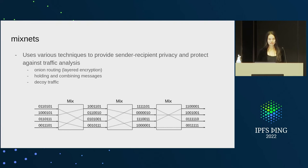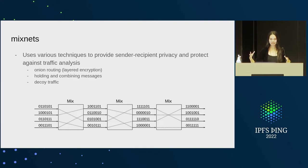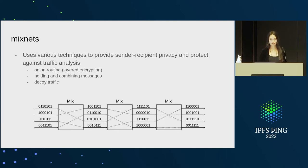Mix nets build on top of onion routing and add other techniques for stronger privacy. With onion routing, you're still vulnerable to timing analysis and traffic analysis. A mix net adds techniques to prevent against that. It uses onion routing but also combines messages into fixed-size bundles, holds messages for certain amounts of time to confuse traffic flow, and uses decoy traffic — fake traffic to add more confusion. As you can see in the image, each mix node takes a bunch of messages, bundles them together, reshuffles them, and sends them to the next node. By the end, you've completely broken the link.